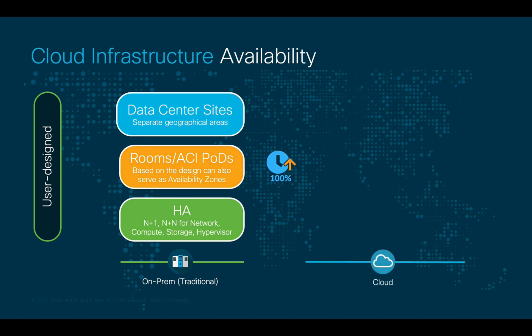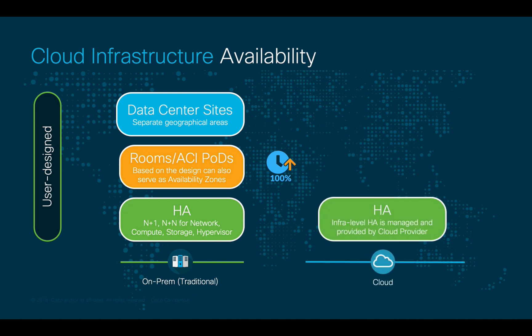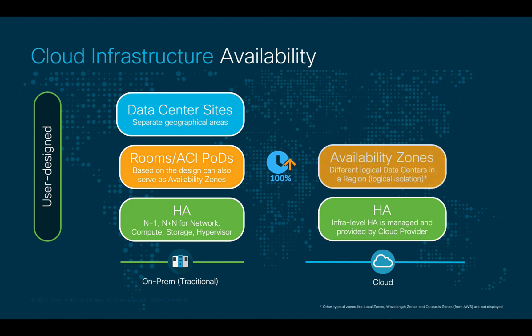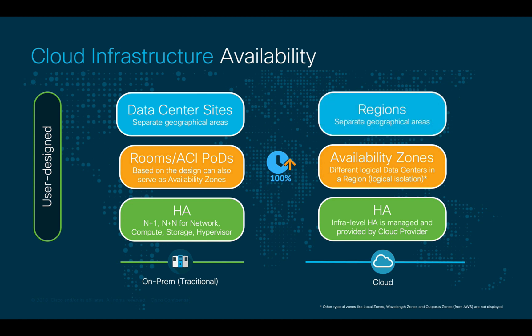Now, if we take a look at the public cloud side, infrastructure-level HA and redundancy are fully managed by the cloud provider. You still need to consider redundancy as part of your overall cloud design at different levels. Cloud providers have regions and availability zones to support this. Availability zones are logical data centers with separate power and networking resources, which can help minimize disruption in a specific region. Still, just like with on-prem designs, natural disasters may happen. Therefore, you want to make sure that you also consider multiple regions as part of your overall plan.